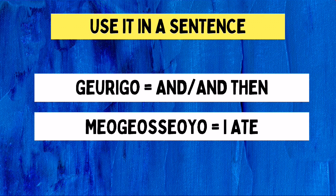The next part of the sentence is kurigo, and this is our word for today. It is used as a conjunction meaning 'and' or 'and then,' to indicate that another action is done aside from the first. In this sentence, the next action done is to eat. That's why we have mogo-soyo as the fifth part. The root verb of mogo-soyo is mokda, which means 'to eat,' and we added o-soyo to make it past tense. So mogo-soyo means 'I ate,' and kurigo mogo-soyo means 'and then I ate' or 'I also ate.'